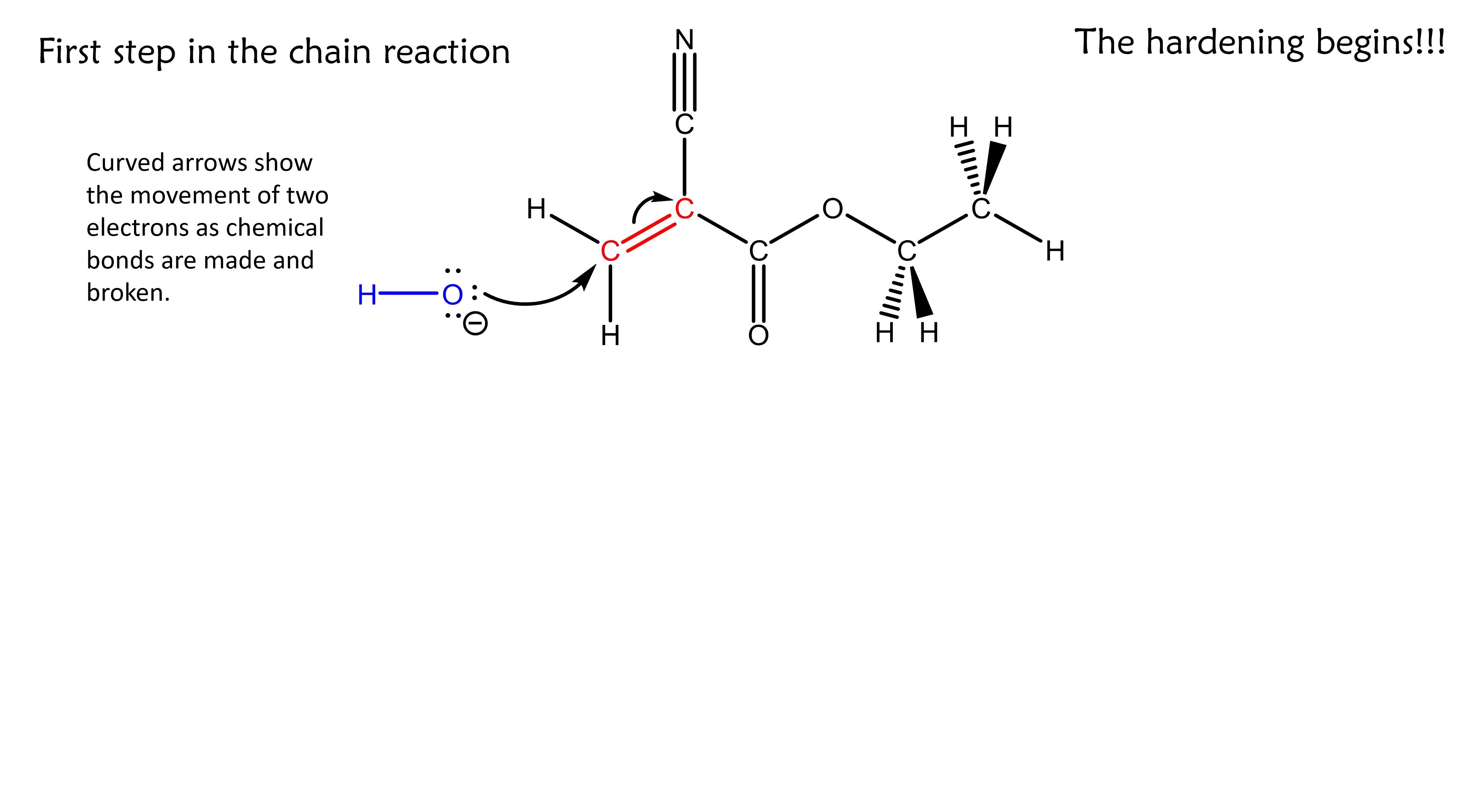The two electrons from that carbon-carbon bond relocate to the second carbon atom. These arrows that I've drawn are a standard way to represent the movement of two electrons during a chemical reaction.